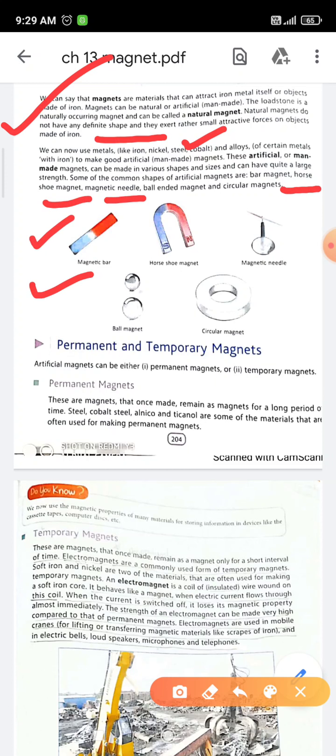Artificial magnets come in different shapes and sizes: bar magnet, horseshoe magnet, magnetic needle, ball magnet (ball-shaped), and circular magnet.